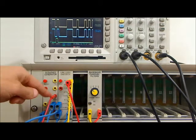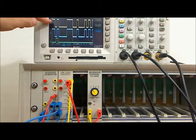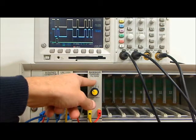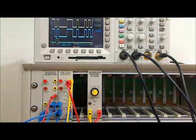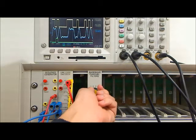Currently, we are viewing the signal out of the line code encoder and the signal out of the baseband channel filter. Set to position 1, no filter. We have three filter options, position 2, 3, and 4.